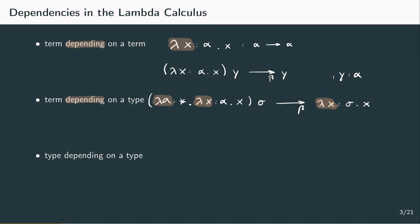This term-term dependency can never be abandoned, as we would lose every term abstraction and application when doing so. Drawing from terms depending on terms and terms depending on types, you might already have an idea about how types depending on types could work. A term depending on a term is a term whose end result changes according to an input term, so we constructed terms with the help of other terms. A type depending on a type is a type whose end result changes according to an input type, so now we're going to construct types with the help of input types.